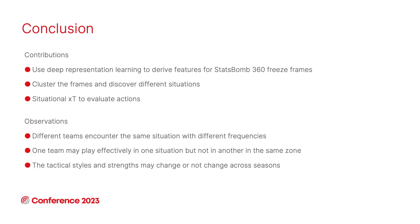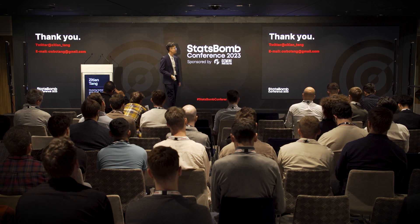In conclusion, in this work we use deep representation learning to develop features for StatsBomb 360 frames. We cluster these frames over the representation space to discover different situations in football. We develop situational expected threat using the discovered situations. In the analysis, we observe that: different teams may encounter the same situation with different frequencies; one team may play effectively in one situation but poorly in another even in the same area; and tactical styles and strengths may or may not change across seasons, all of which can be analyzed by our method. Thank you for listening.